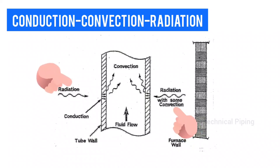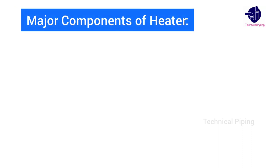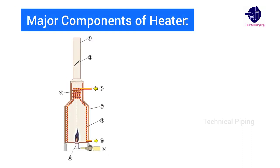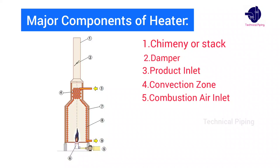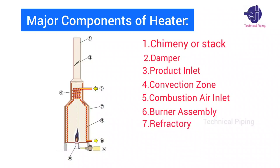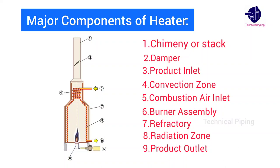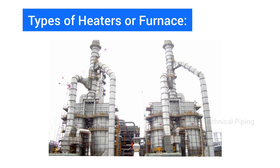The major components of a heater are: number one, stack; number two, damper; number three, product inlet; number four, convection zone; number five, combustion air inlet; number six, burner assembly; number seven, refractory; number eight, radiation zone; and number nine, product outlet.